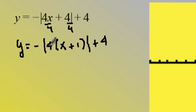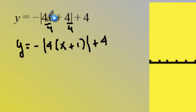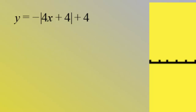The negative sign is going to be a reflection over the x-axis. The four is going to be a vertical stretch of four. The plus one is going to be a shift to the left one — remember it's the opposite of what I see. And the four outside is going to be a shift up four. So whenever you have a number inside, we need to divide it out so we can see what the horizontal translation actually is.